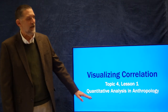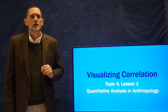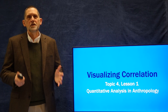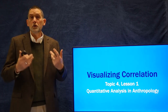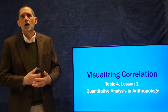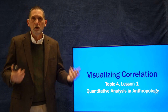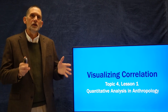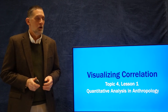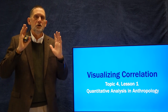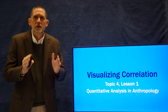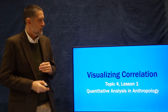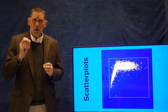Welcome back to Quantitative Analysis and Anthropology. We're on Topic 4 now, and we're going to be spending this topic talking about correlation. Correlation is one of the most important statistical exercises you're going to use - you'll use it lots and lots of times in anthropology, read about it all the time, and probably use it in projects. It's a very important topic, and also a relatively simple one. We're going to start off talking about how we visualize correlation, and I want to reemphasize that in this course I'm looking to give you a sense of statistics conceptually and visually. That doesn't come together any better than in correlation, so we're going to begin with scatter plots.